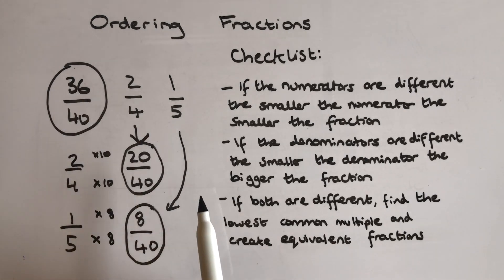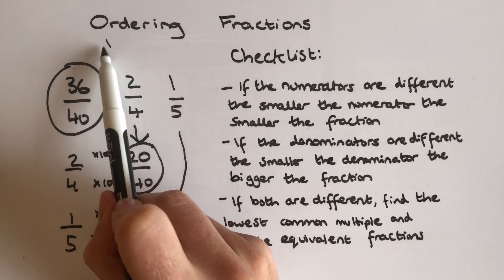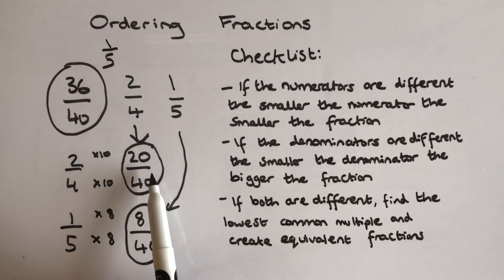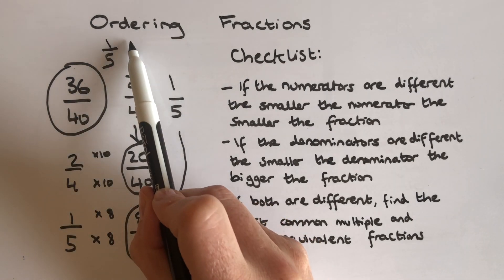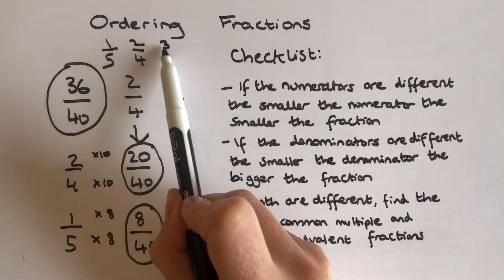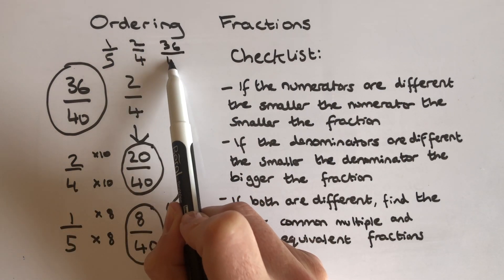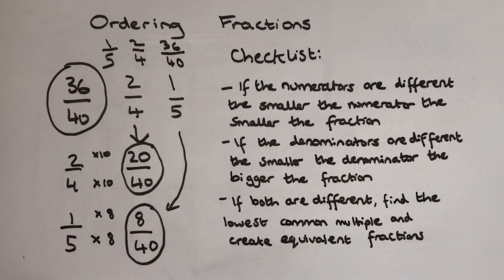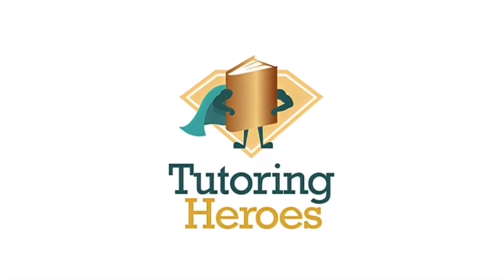So if you're looking at these fractions from the beginning, it's going to be 1 fifth, then 2 quarters, and the last one is going to be 36 over 40. I hope that helps a little bit with trying to order your fractions. If that was a little bit confusing, go back and have a look at our equivalent fractions video. Thanks for watching this video today, brought to you by Tutoring Heroes.